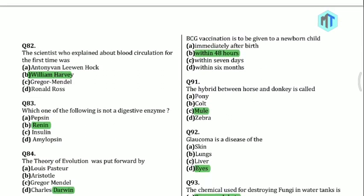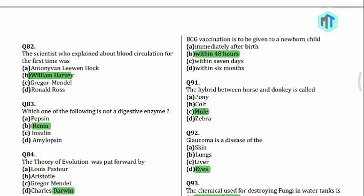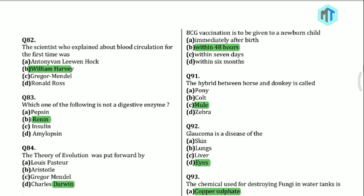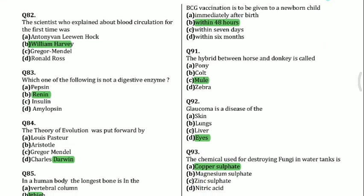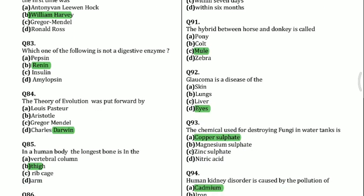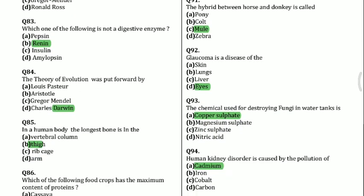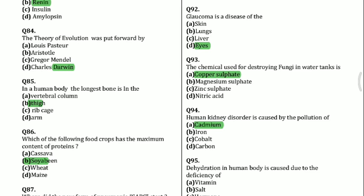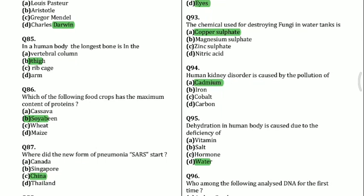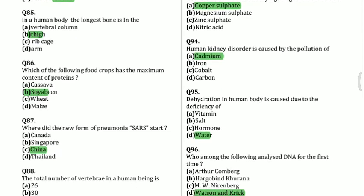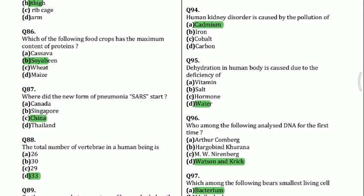Question 90: BCG vaccine is to be given to a newborn child within 48 hours. Question 91: The hybrid between horse and donkey is called a mule. Question 92: Glaucoma is a disease of the eye. Question 93: The chemical used for destroying fungi in a water tank is copper sulfate.